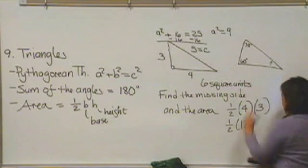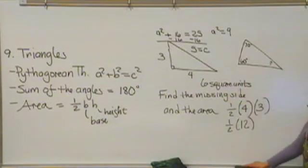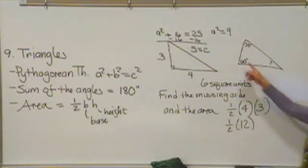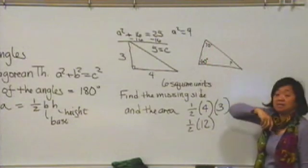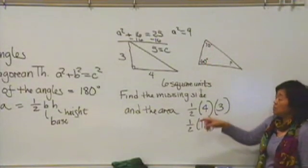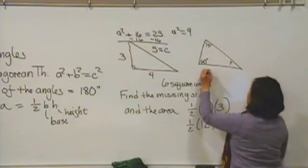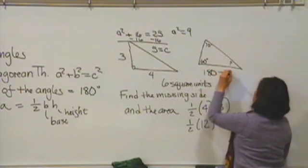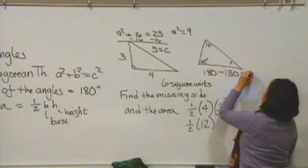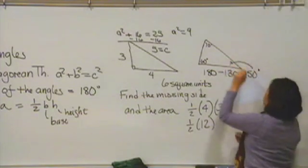And last here, we'd like to find the missing angle of this triangle. I see that two angles are given, and they add up to 130 degrees. I remember that the sum of all of the angles has to be 180 degrees. So if I have 180 minus 130, that means that that missing angle would be 50 degrees.